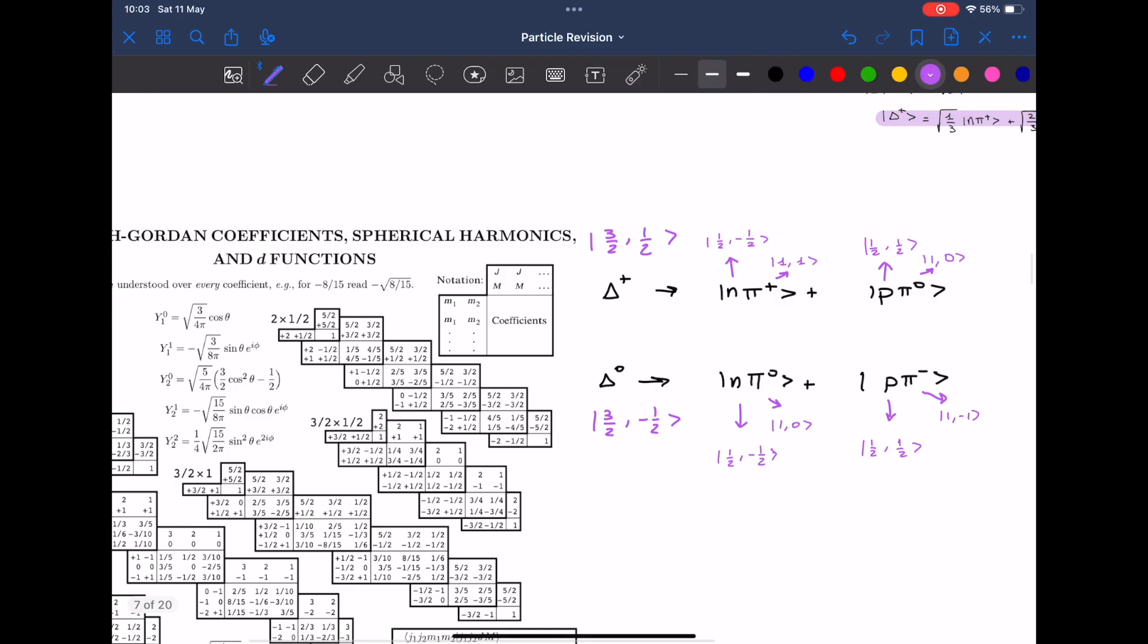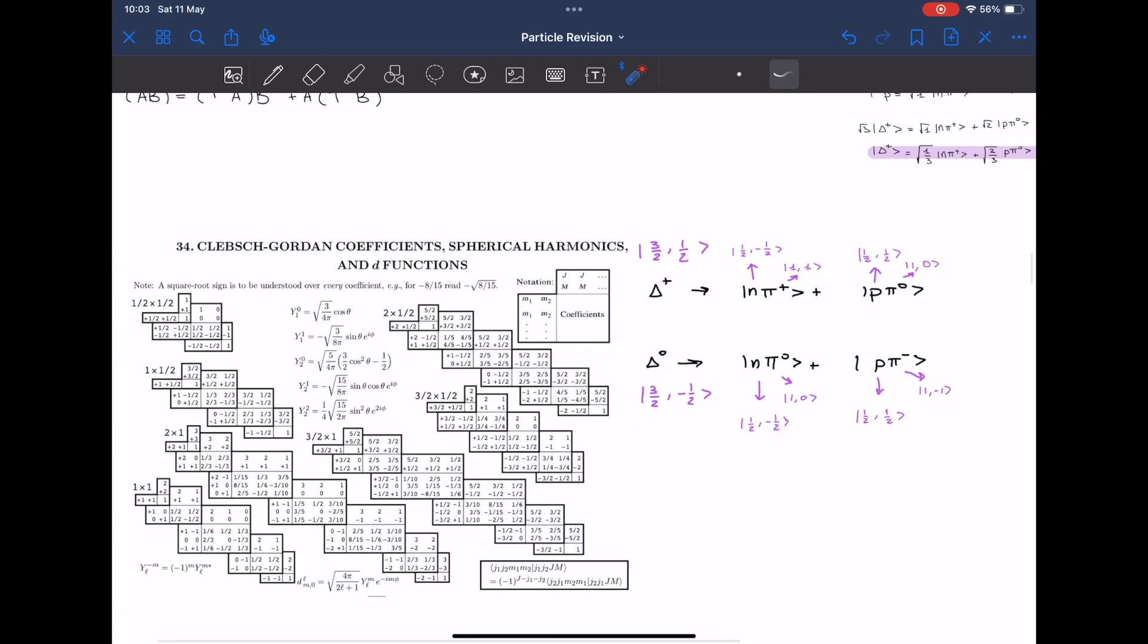The first thing that I like to do is write down all the different isospin and isospin projections of each particle, and this makes the process a bit easier and a bit quicker.